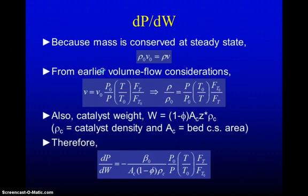Because the mass is conserved, we would expect that at steady state, the product of the density times the volumetric flow rate remains constant, because that's basically the mass flow rate. If we take earlier volume flow considerations into account, the volumetric flow rate should be the initial volumetric flow rate times the initial pressure over the final pressure, times T over T naught, times the total molar flow rate over the initial total molar flow rate. Which allows us to write an expression for the relationship between the current density and the initial density.